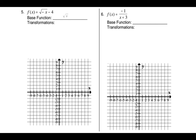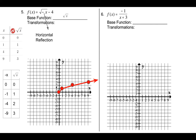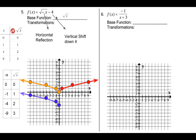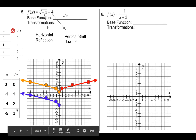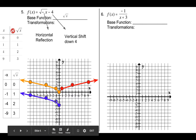Number five uses the square root function. The base points are (0,0), (1,1), (4,2), (9,3). There is a horizontal reflection and no stretches. The x values simply become negative, so the orange graph has those x values flipped. Then we shift everything down four — we take each point and shift it down four, subtracting four from all the y values.